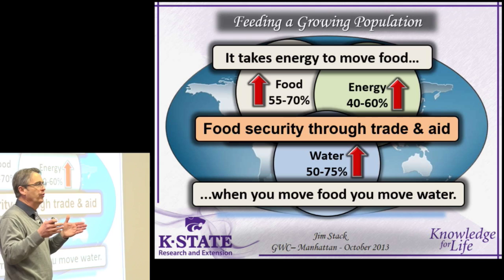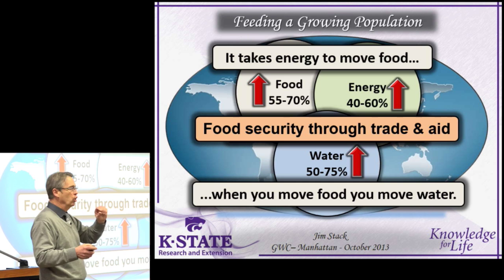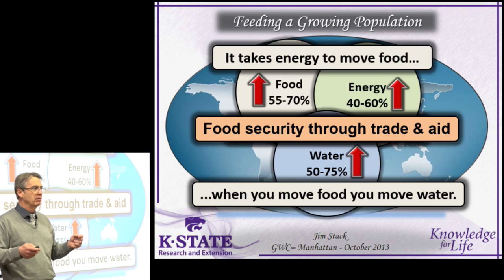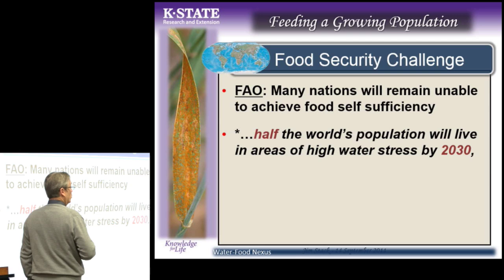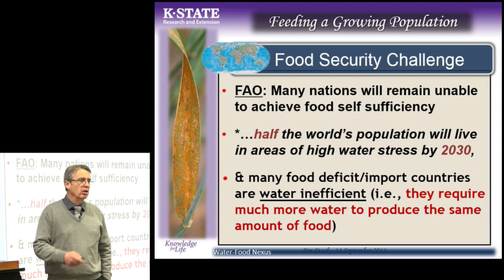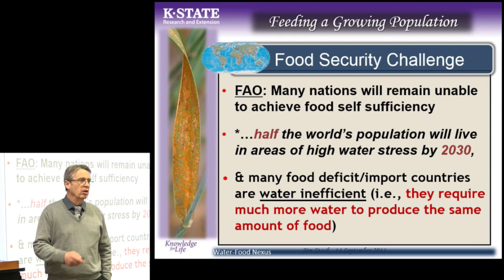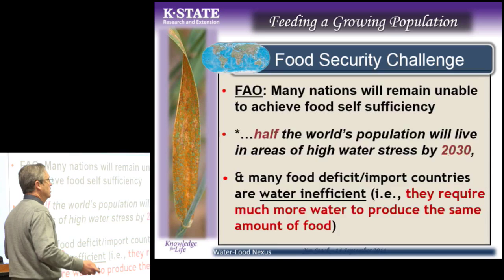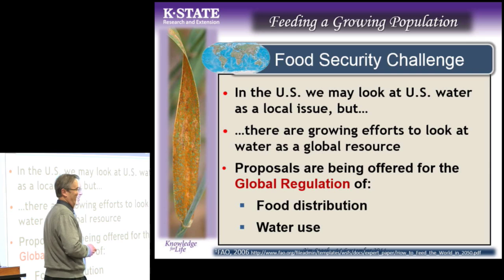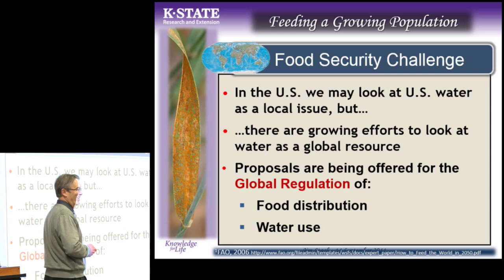Half the world's population will live in areas of high water stress by 2030. Many food-deficit import countries are water inefficient — they require much more water to produce the same amount of food. In the U.S. we may look at water as a local issue, but there are growing efforts to look at water as a global resource. There are groups proposing the global regulation of food distribution and water use — I think that's a really bad way to look at this. Look into the virtual water concept. Oil conflicts were central to the 20th century; the struggle over fresh water is a new turning point in the world order.